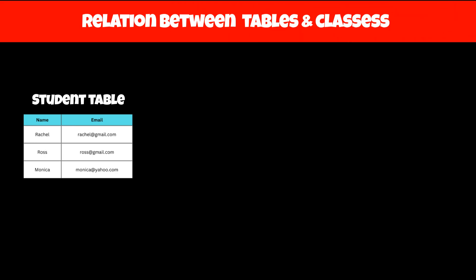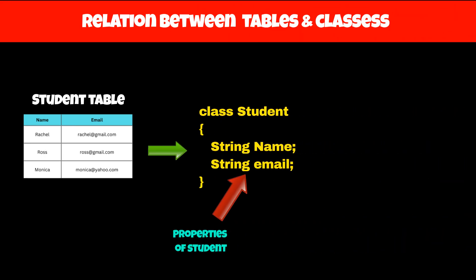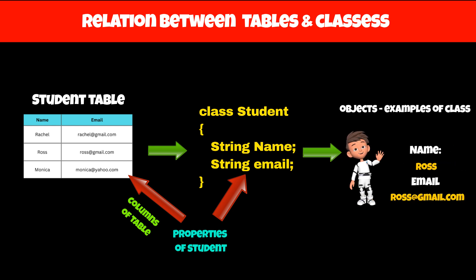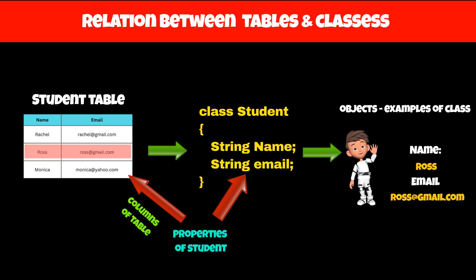Tables in SQL are similar to classes in OOP. Variables of the classes represent their properties, which are similar to columns in a SQL table, which also represent properties of the table. Objects are examples of those classes that contain actual values of the variables. Similarly, rows in the SQL table contain actual values of the columns for that table.